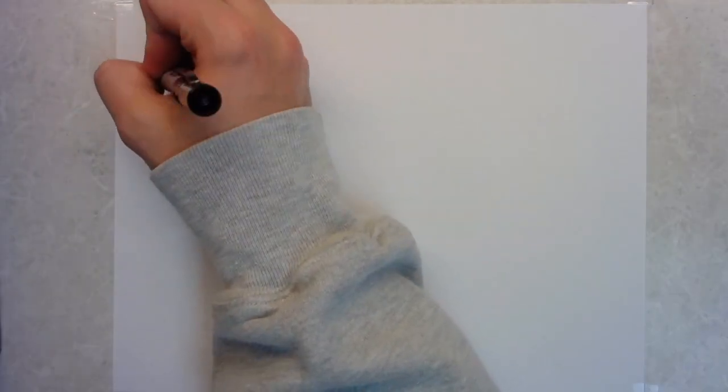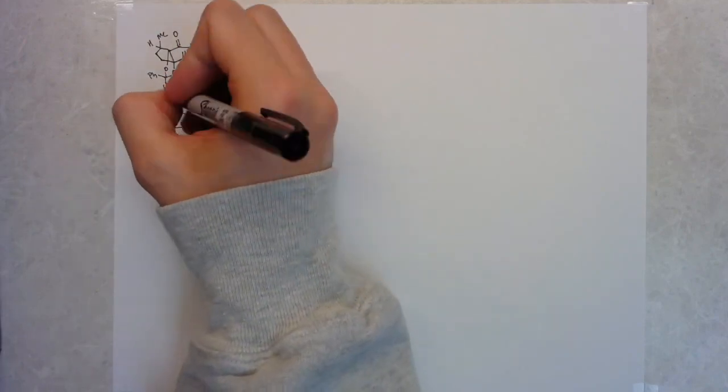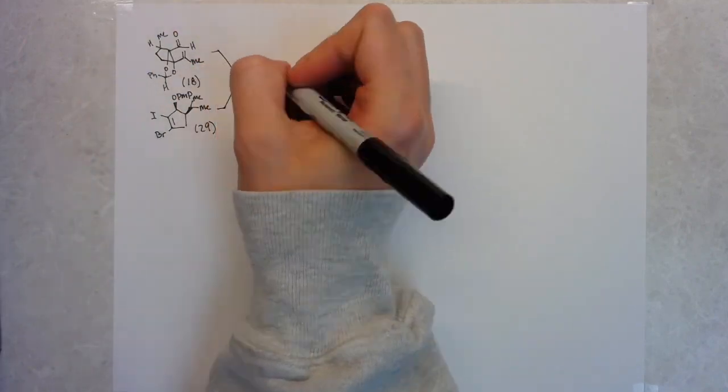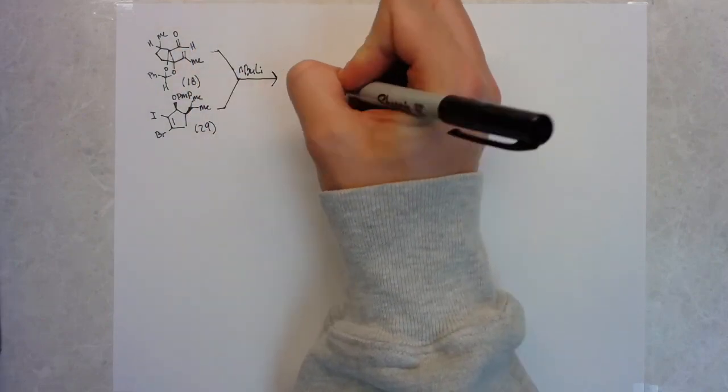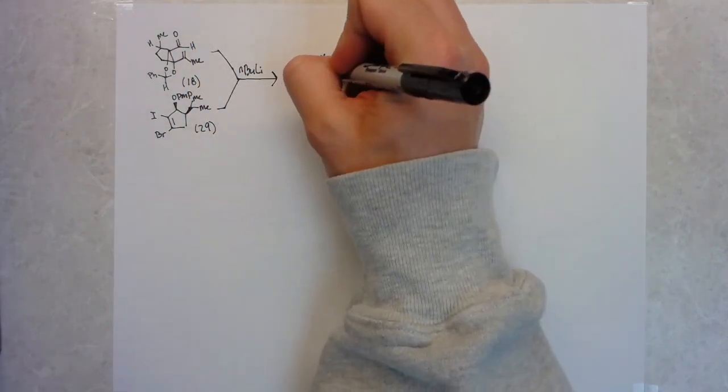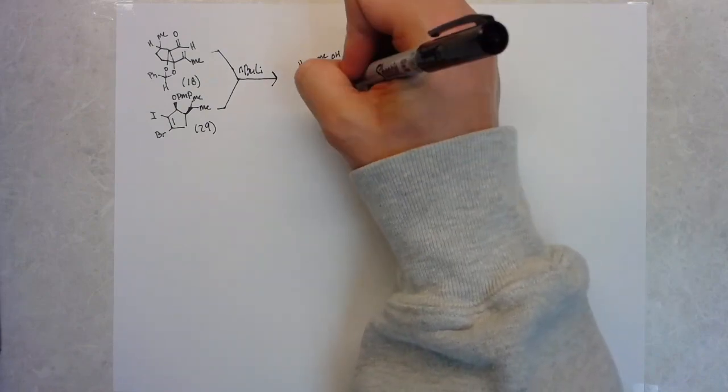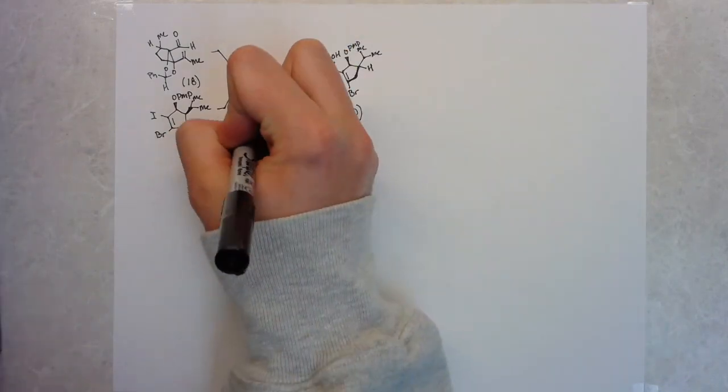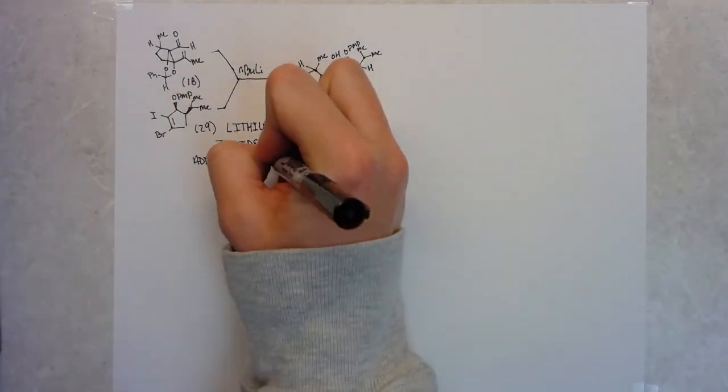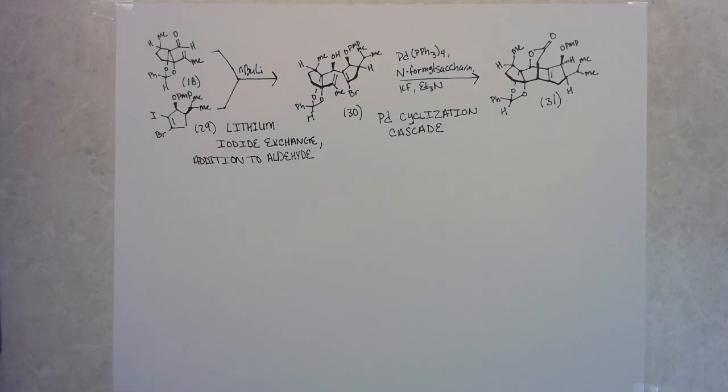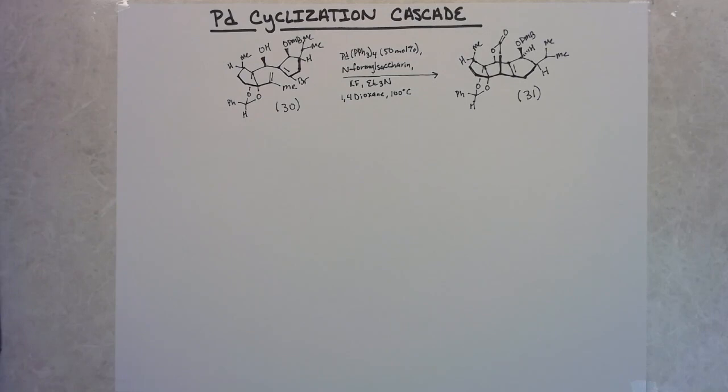Now they couple these two main ring fragments together. They do this using a lithium halogen exchange with the vinyl iodine that they had just assembled, and it adds in to their aldehyde. It adds into the aldehyde from ring C, giving you a new carbon-carbon bond and a secondary alcohol. This sets them up for their palladium cascade reaction that they do some pretty extensive optimization on. They just kind of tethered together those two cyclopental fragments that they had built up. And now they have this vinyl bromide as a handle for this cyclization cascade.